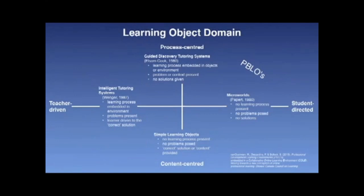This slide is a repeat of the initial slide from the last video clip. It's repeated here to provide context for the ongoing discussion regarding the learning object landscape or domain. Learning objects can be found in a wide variety of shapes and sizes. Typically they are characterized as small, reusable digital learning resources which support learning. The definition here also includes larger environments designed for similar purposes.